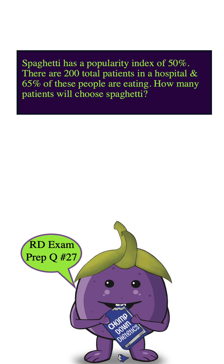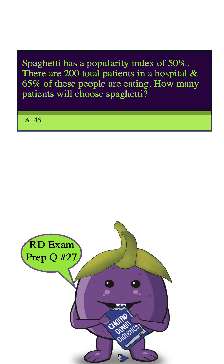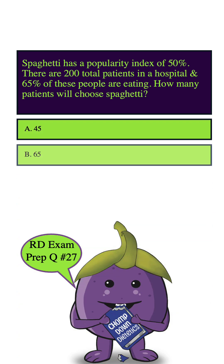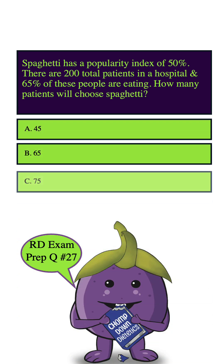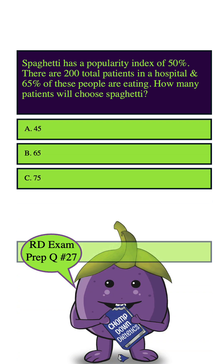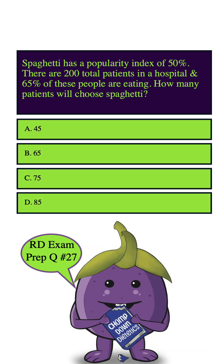Spaghetti has a popularity index of 50%. There are 200 total patients in a hospital and 65% of these people are eating. How many patients will choose spaghetti? A. 45, B. 65, C. 75, D. 85.